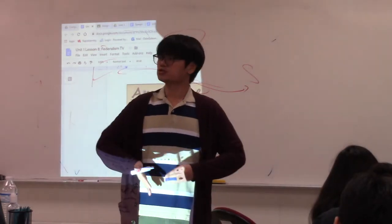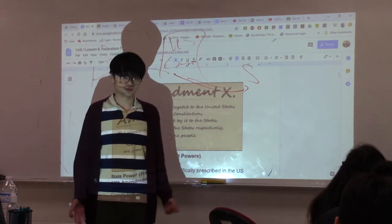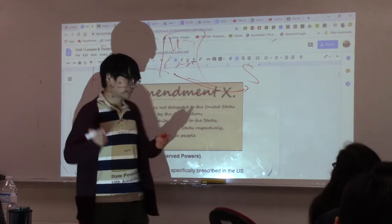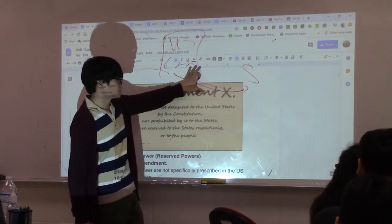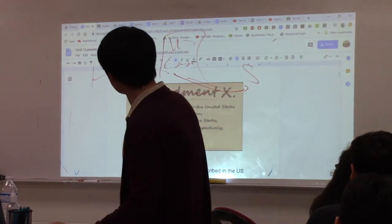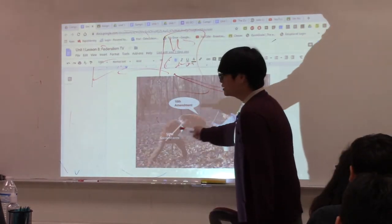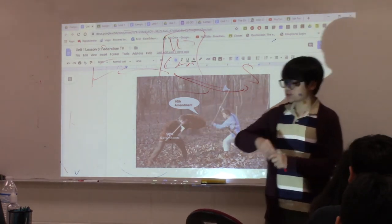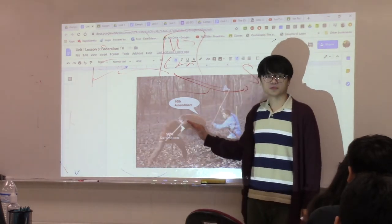For example, education is not mentioned in the U.S. Constitution, so it is reserved to the states. Marriage is not given to the federal government, so it is reserved to the states. Whatever power the Constitution doesn't give to the federal government is reserved to the states. The Tenth Amendment acts like a shield whenever the U.S. government tries to encroach upon something that belongs to state governments.